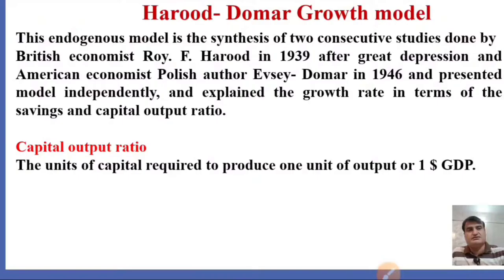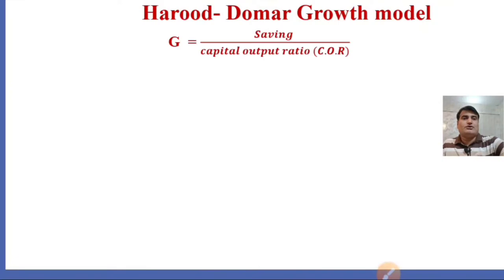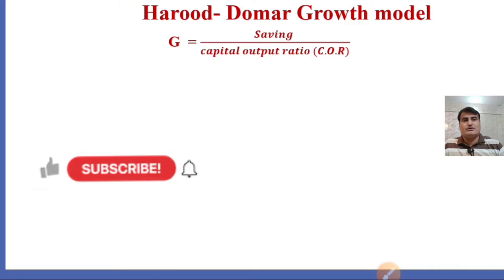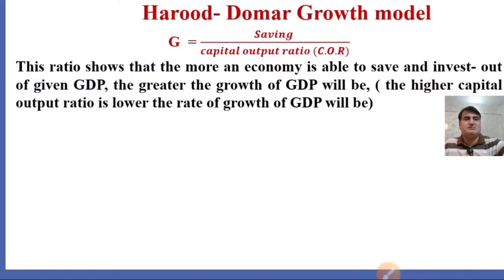The rate of economic growth depends on two things: higher saving and lower capital output ratio. The formula of the Harrod-Domer growth model is: G equals S divided by COR, where G is the growth rate, S is saving, and COR is the capital output ratio. The more an economy is able to save and invest out of a given GDP, the greater the growth of GDP will be. A higher capital output ratio means a lower rate of growth of GDP.